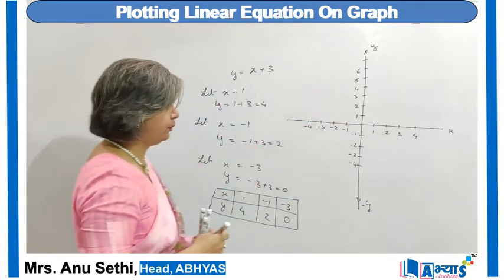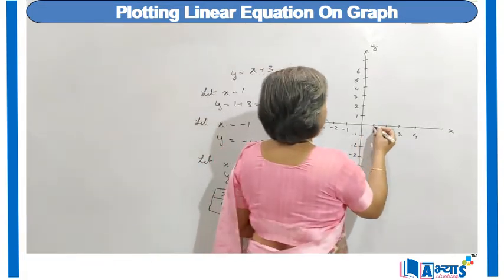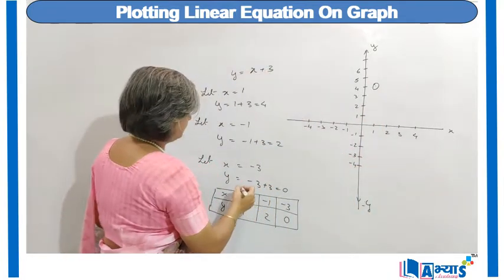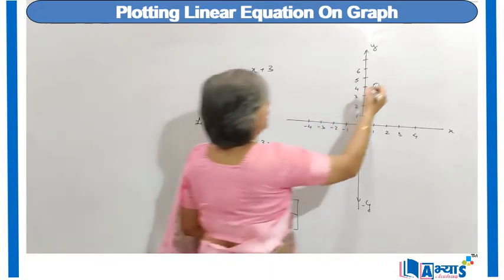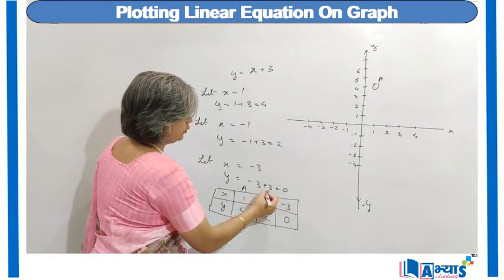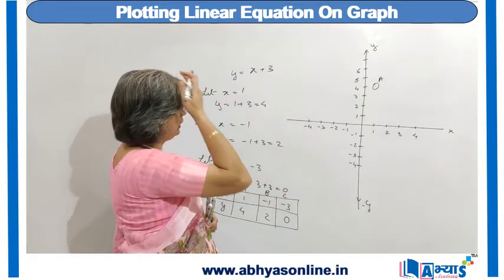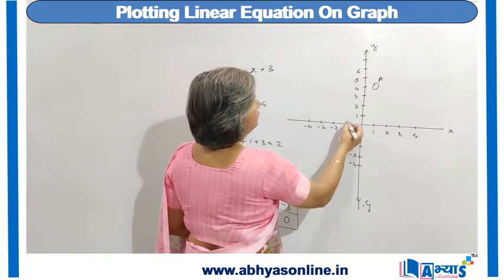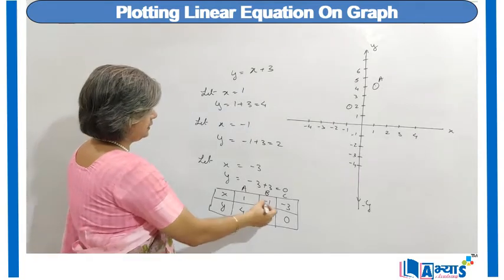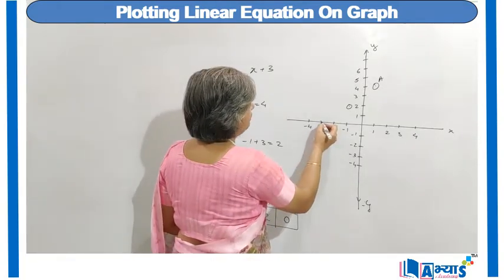Now we will plot the points. For x equal to 1 and y equal to 4, let us call this point A. For point B, x is minus 1 and y is 2, so the point will be somewhere here. For point C, x is minus 3 and y is 0, so the point will be somewhere here.